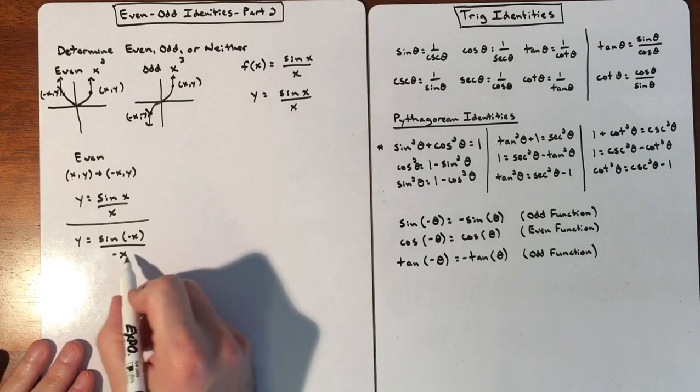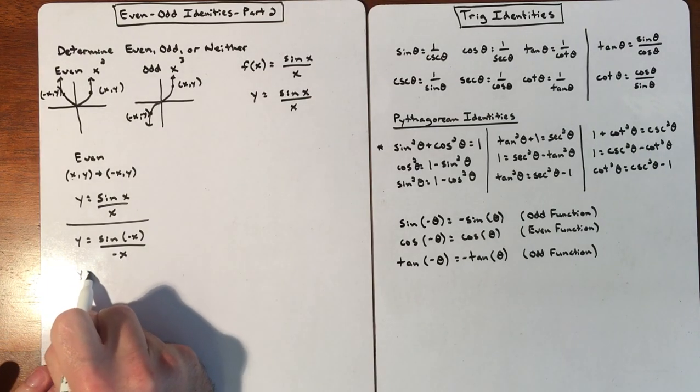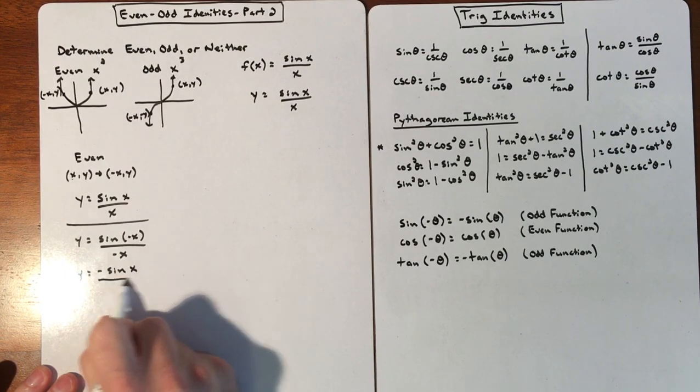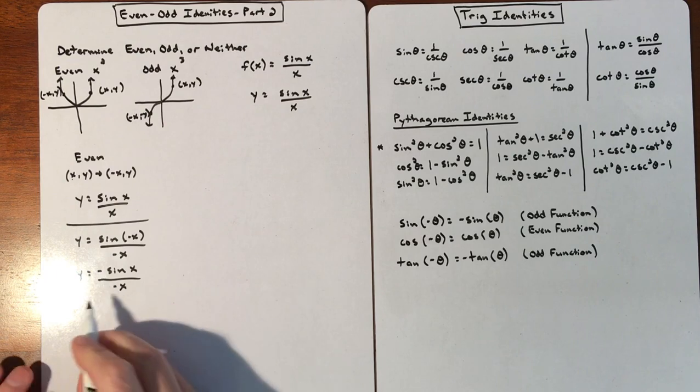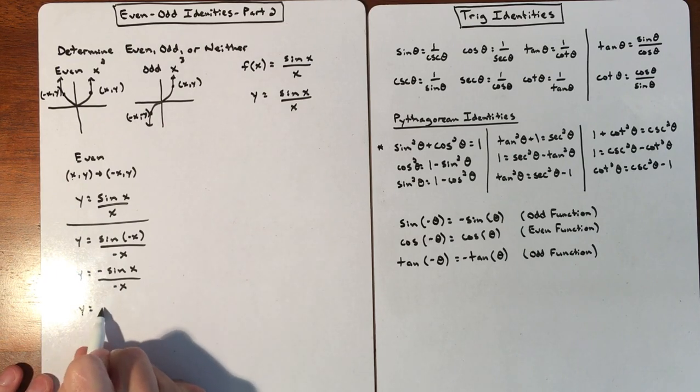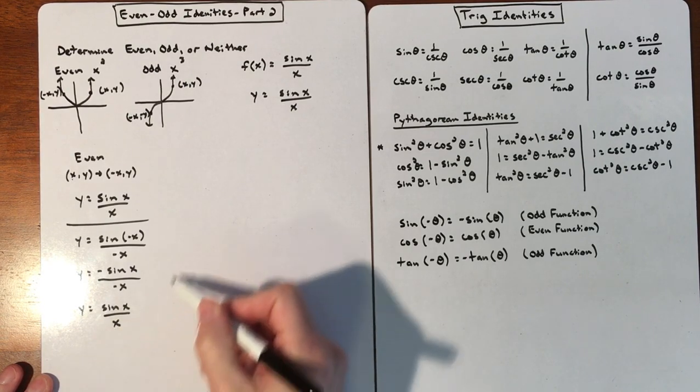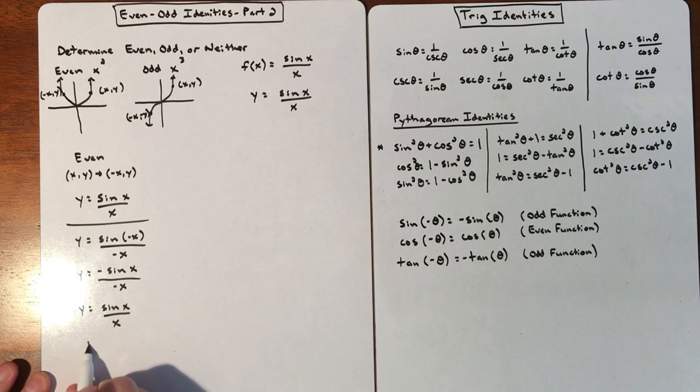So if we rewrite this, we're going to have y equaling a negative sine of positive x divided by negative x and those negatives will cancel. And we will be able to simplify it back to the original. So if we can turn it right back to the original, then it is going to be considered even.